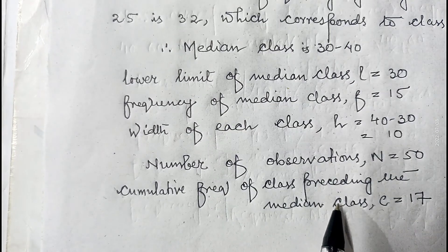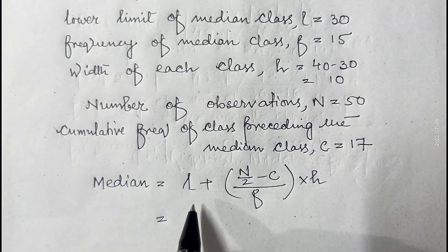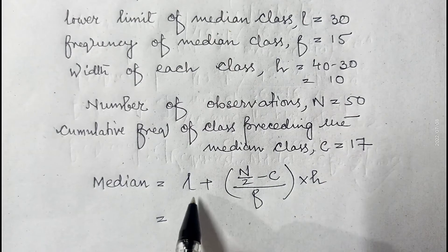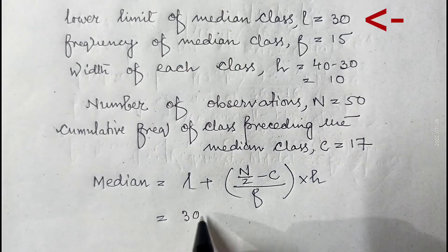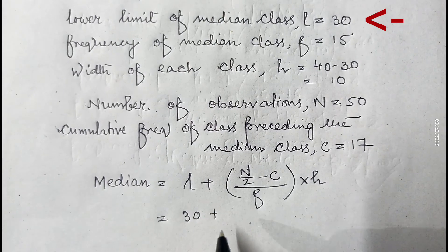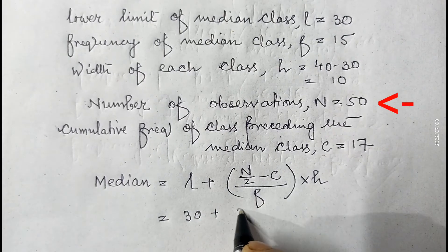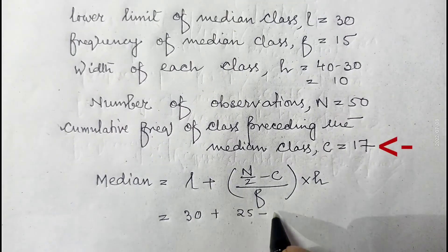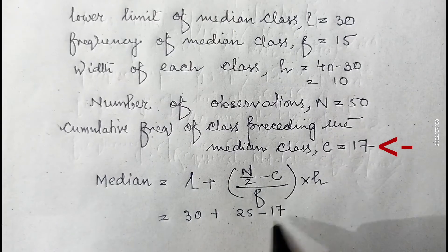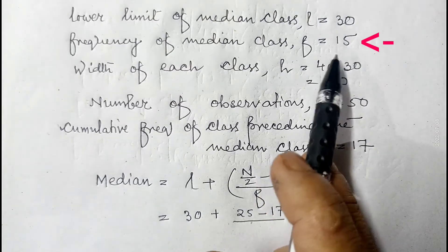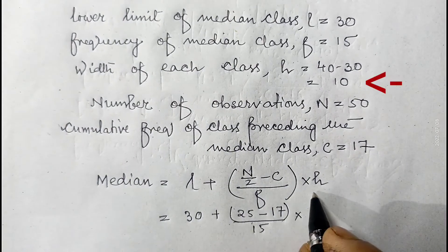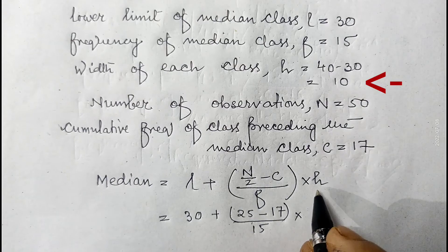The median formula is: Median = l + [(n/2 − c) / f] × h. Here l is 30, n/2 is 25, c is 17, f is 15, and h is 10. Substituting: 30 plus (25 minus 17) divided by 15, multiplied by 10.